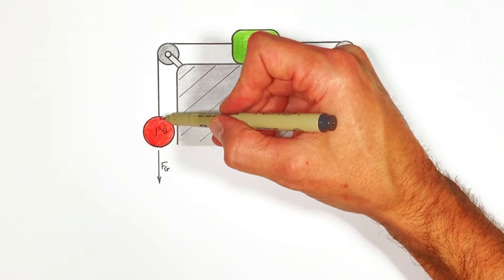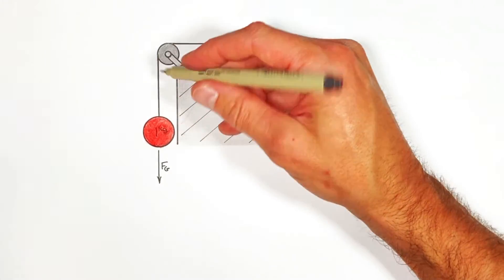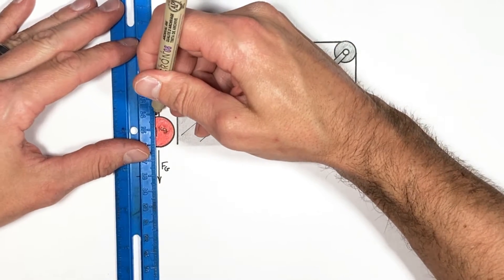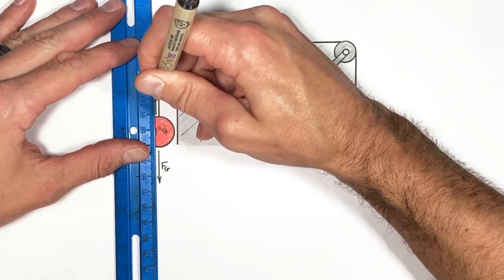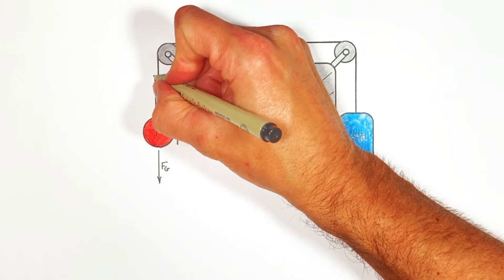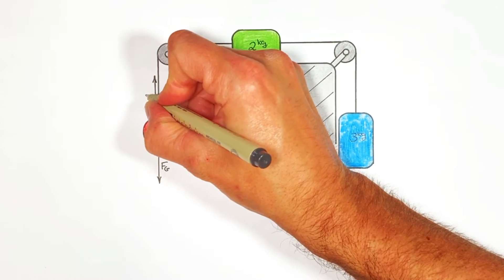Now gravity is acting down on this ball but it's going to be pulled upward as we release all these blocks from rest and the force that's pulling it upward is the tension from this string. Now the tension in the string upward is greater than the force downward by gravity otherwise the ball wouldn't go anywhere. So I'm going to draw this tension vector just a little bit longer than I drew the gravity vector.